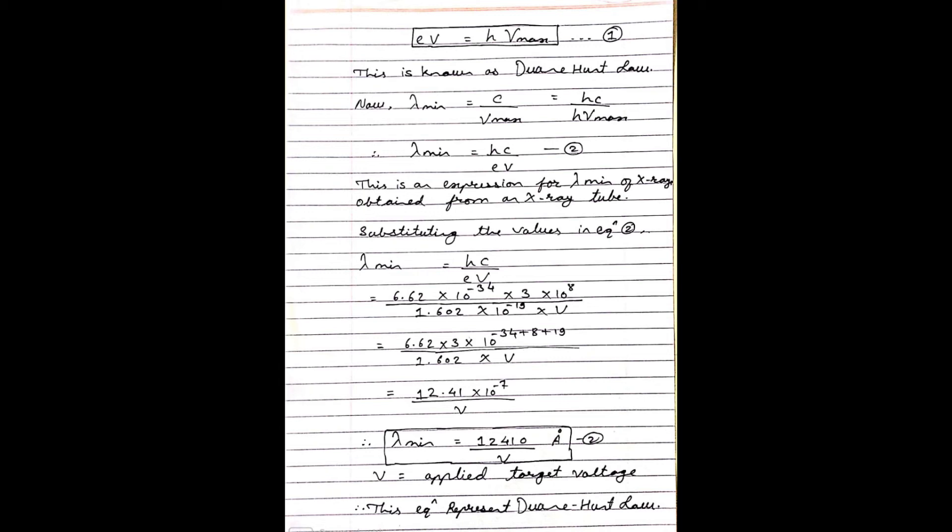We can simplify it more. Substituting the values in equation two, we get lambda minimum is equal to hC upon eV. We can solve: 6.67 into 10 to the power minus 34 into 3 into 10 to the power 8 divided by 1.602 into 10 to the power minus 19 into V. After solving, we can get lambda minimum is equal to 12410 upon V angstroms, where V is the applied target voltage.